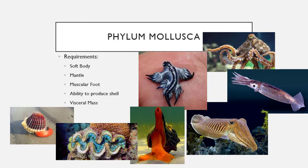Phylum Mollusca is quite possibly the weirdest. The requirement is to have a soft body. There are a lot of different types — our octopus, squid, nudibranchs, cuttlefish, conch snails, giant clams, regular marine clams, and slugs. These animals can be terrestrial or marine, but they all have this very soft body. They also have this thing called a mantle — for the oyster, it's the covering of basically their body parts. With squid and cuttlefish, this big head part is the mantle. With octopus, that head-like part is also the mantle.